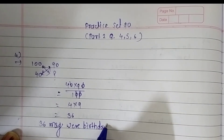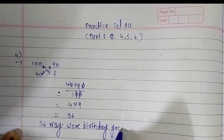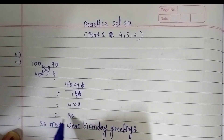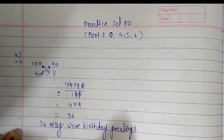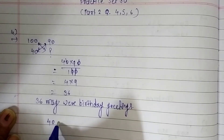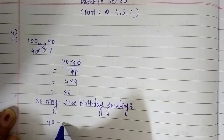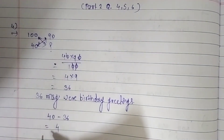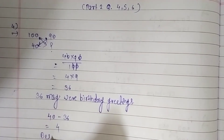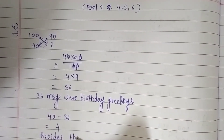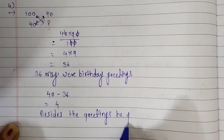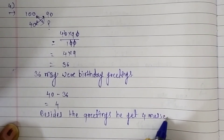Now we have to find out how many other messages there are. We subtract the birthday greeting messages from the total messages. Total messages were 40, and 36 were birthday greetings. So 40 minus 36 equals 4. Our answer is: besides the greetings, he received 4 other messages.